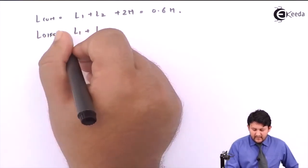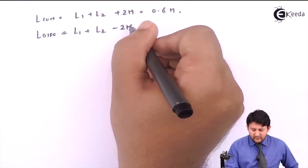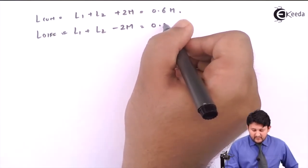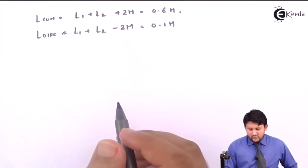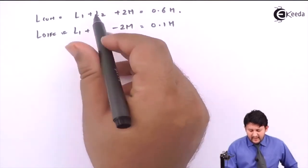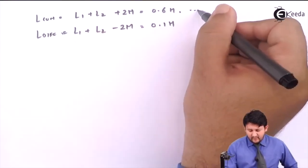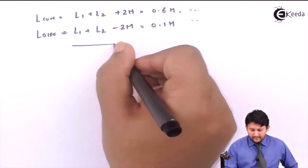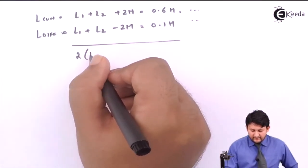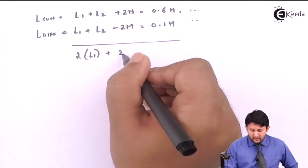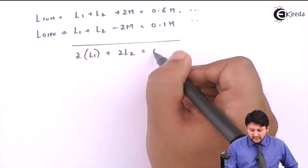This will be L1 plus L2 plus 2M, the value given is 0.6H. For difference, the value is L1 plus L2 minus 2M, the value given is 0.1H. So what I do is I add both equations, equation number one and equation number two.